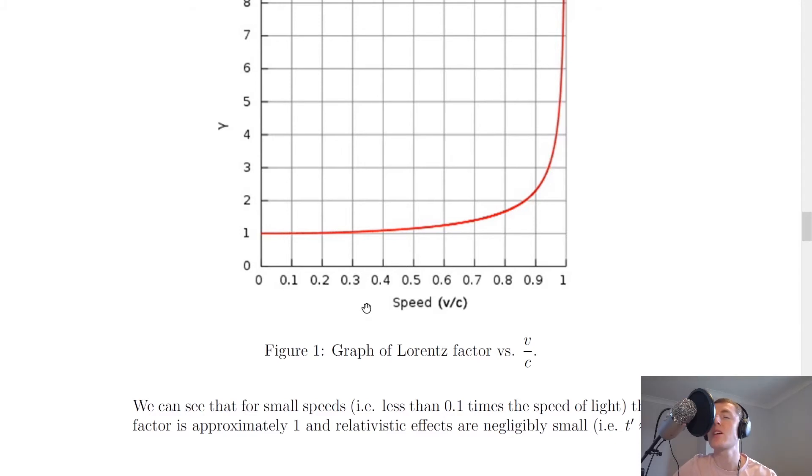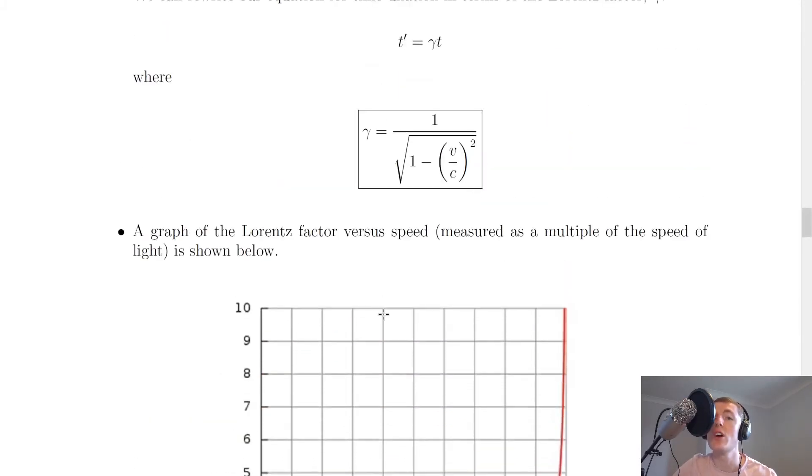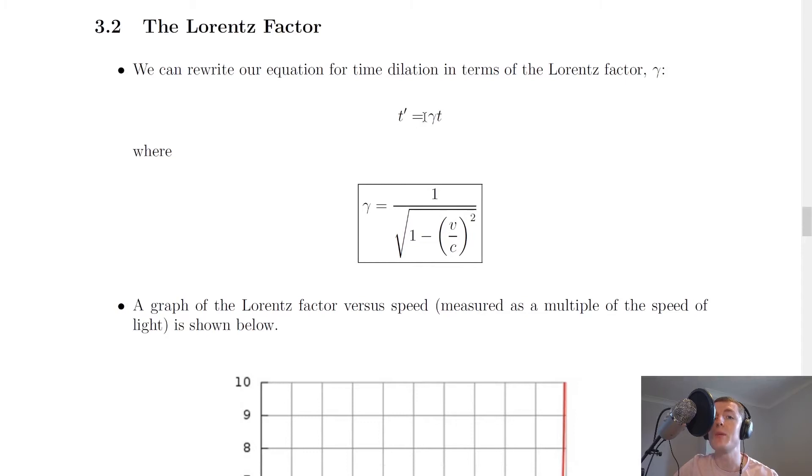So if we look back at our equation for the Lorentz factor, or even the time dilation equation t prime equals gamma t written in terms of the Lorentz factor, if we're saying that gamma is equal to 1, then we simply get that t prime is approximately equal to the time. And that's what we experience in everyday life.